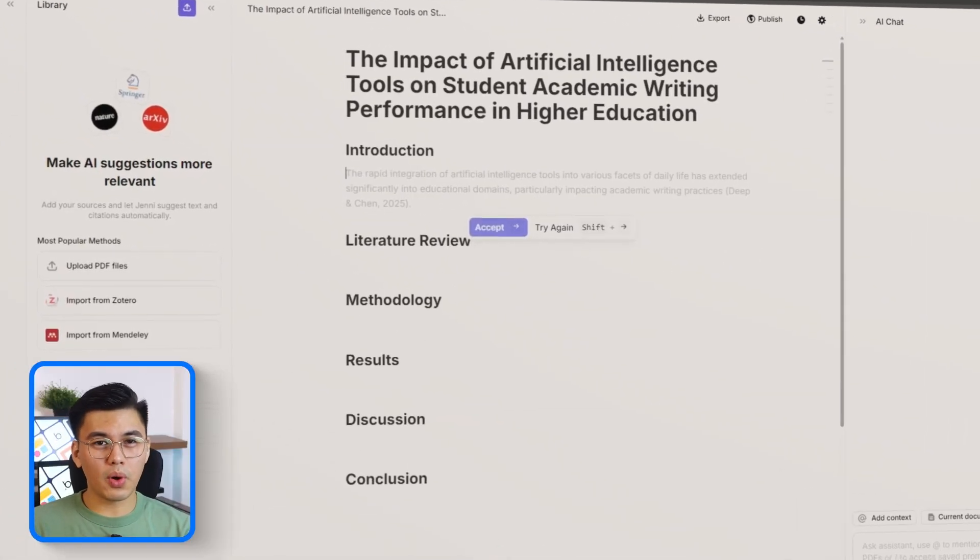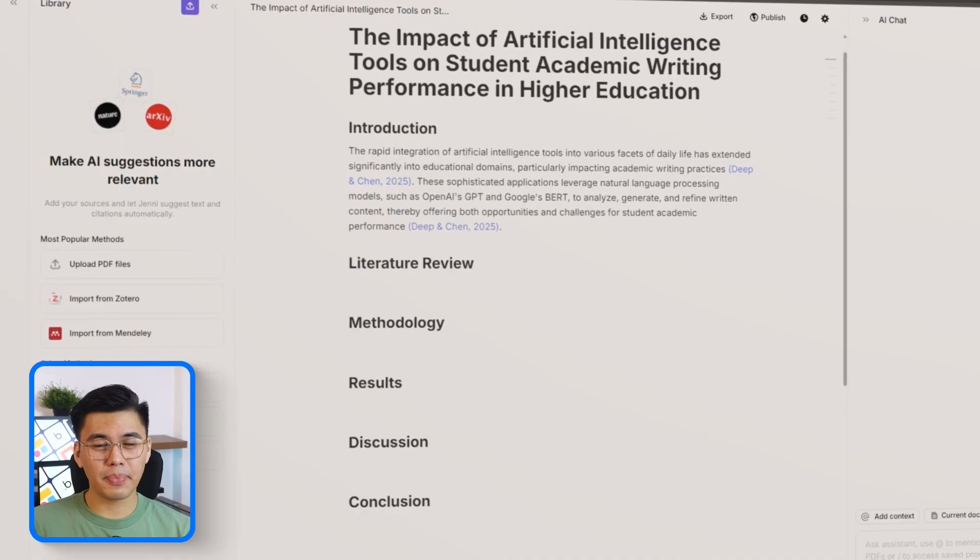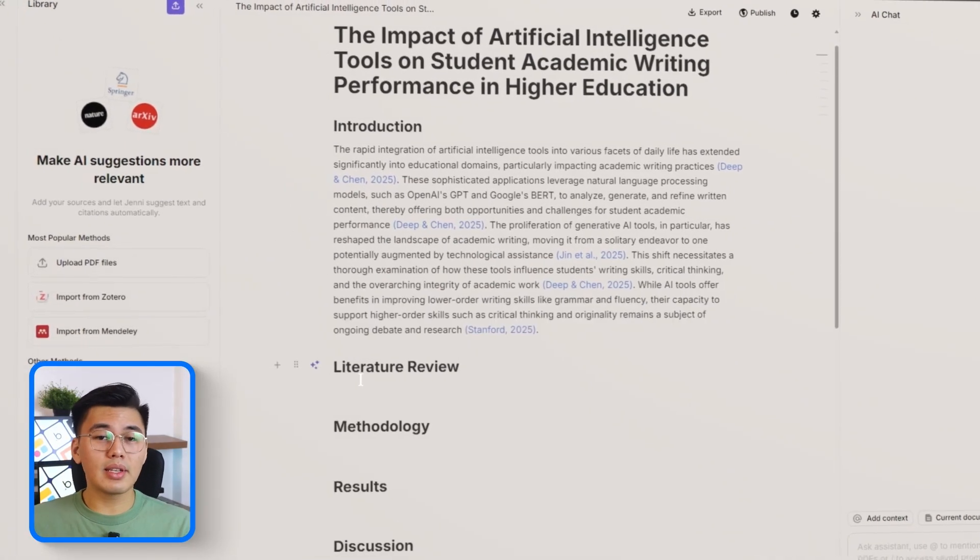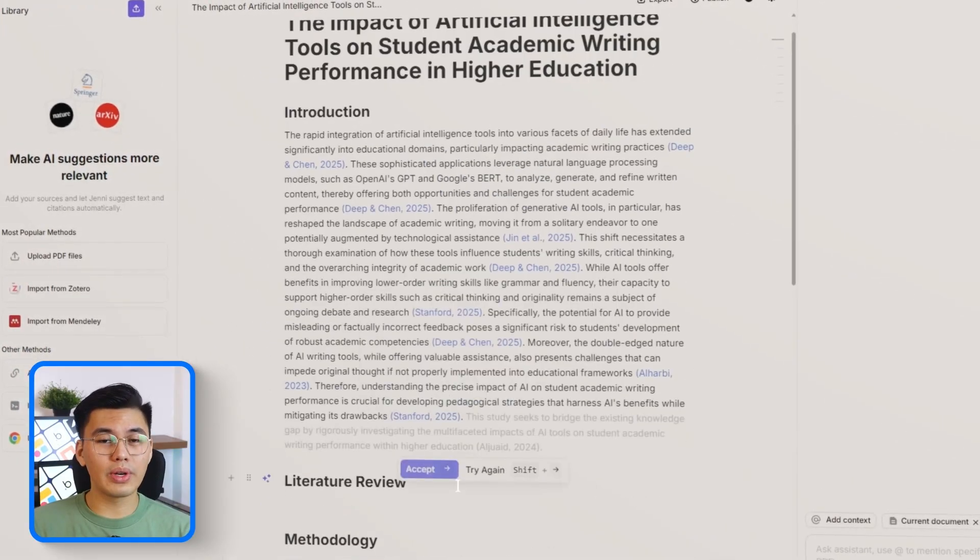Once the full prompt is copied, we're ready to move into the generation step. And this is where Jenny turns that one block of text into a full, polished proposal. We're going to begin the actual writing process by opening a brand new document inside Jenny.ai. Starting with a blank page keeps everything clean and makes it easy to see exactly what the AI is doing as we move through each step.